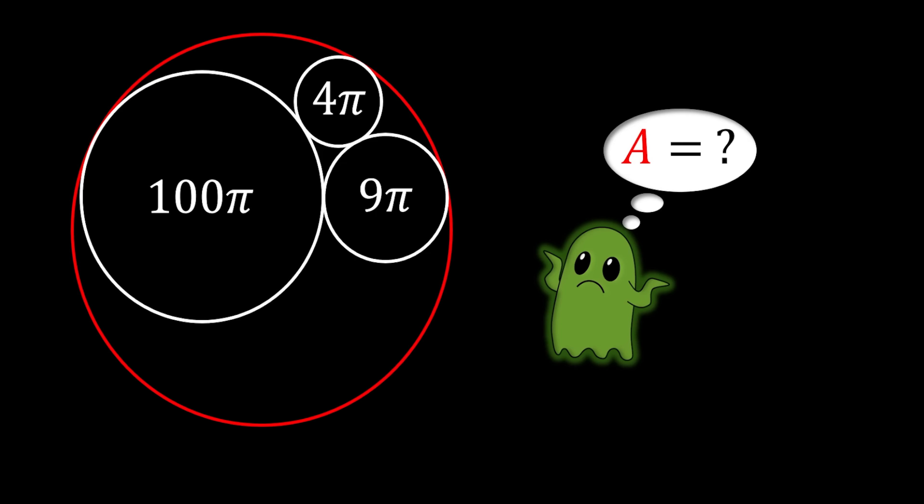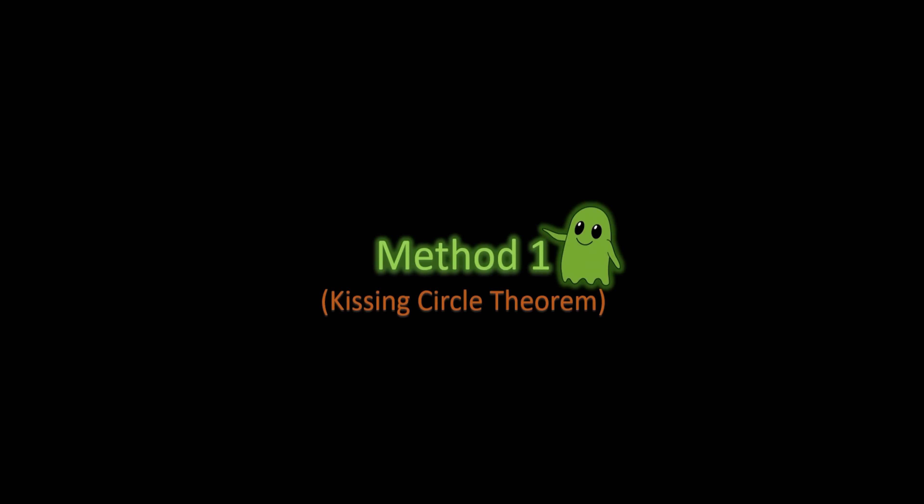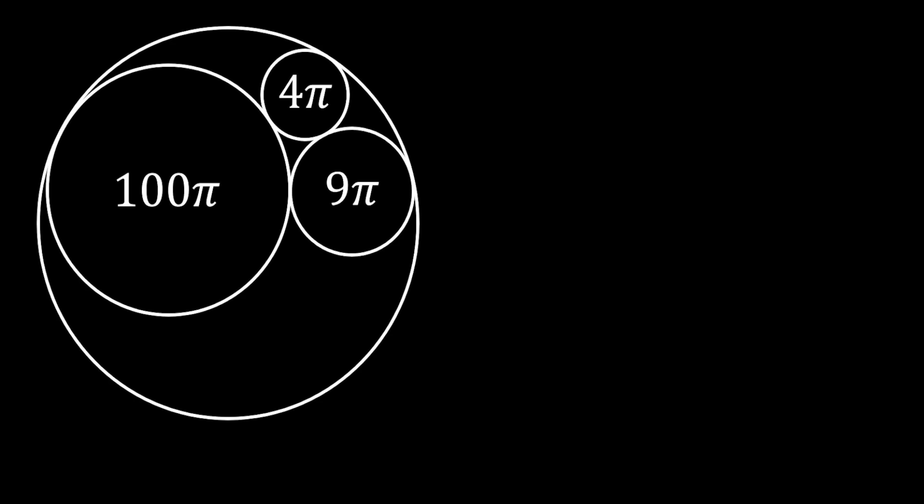Alright, so let's solve this problem. I'm going to use a beautiful romantic theorem from 1643, but after this I'm also going to show you the classical way of using geometry and trigonometry to solve this problem, if you didn't hear about this theorem. First, we're going to use something called the kissing circle theory, but before that, we're going to calculate the radii of all three inner circles.